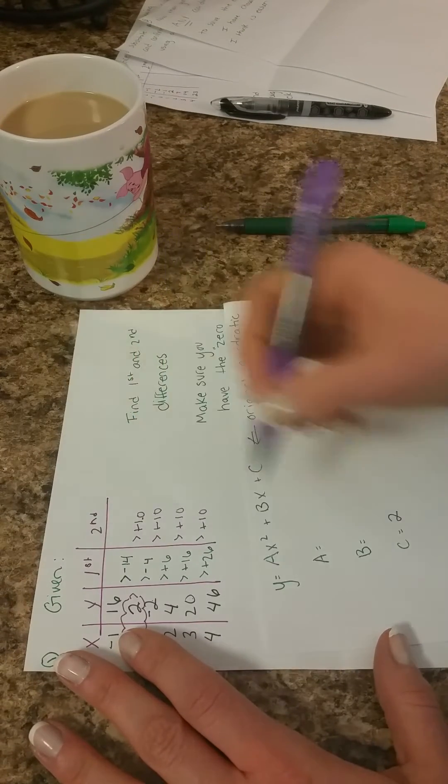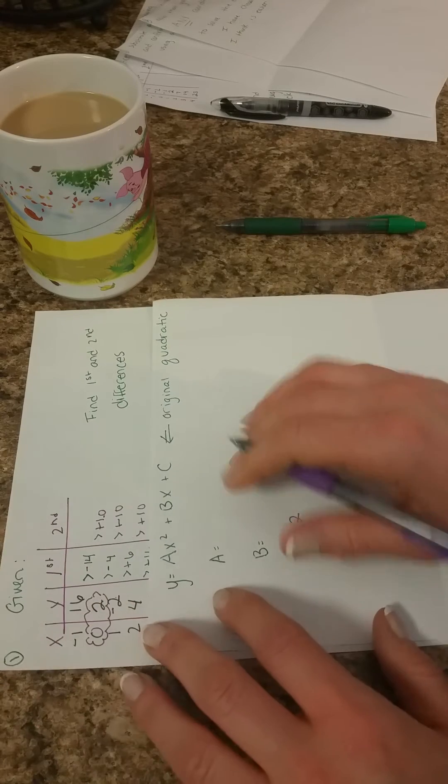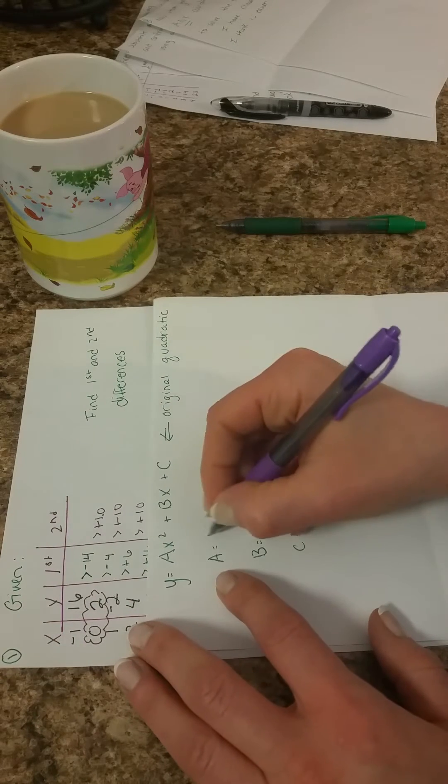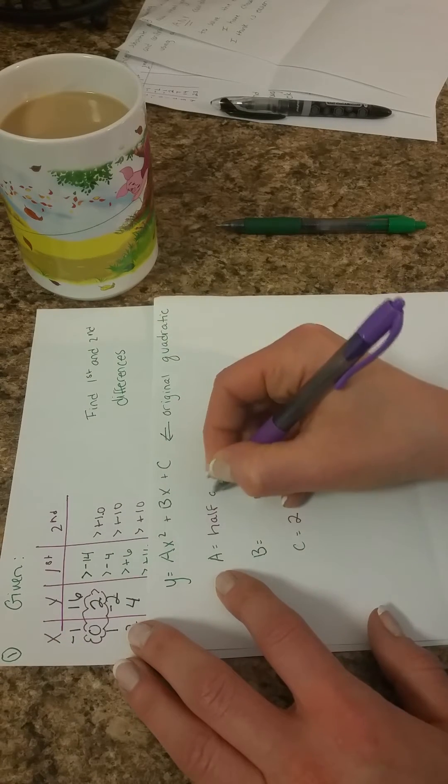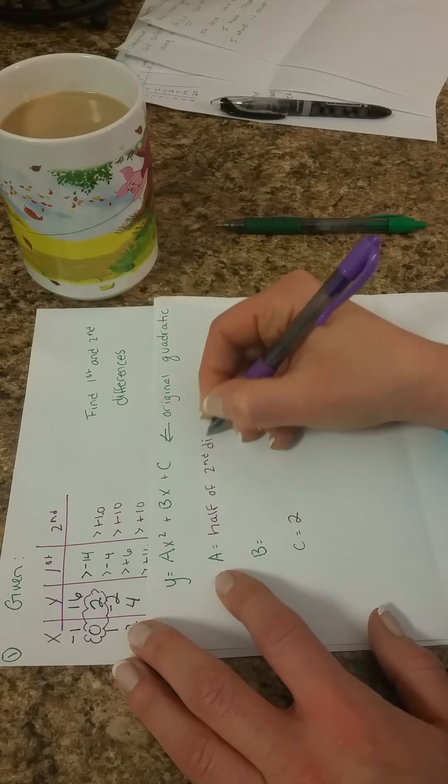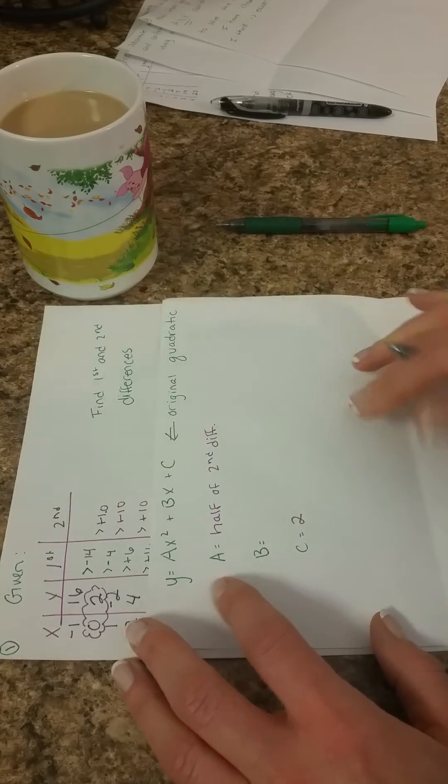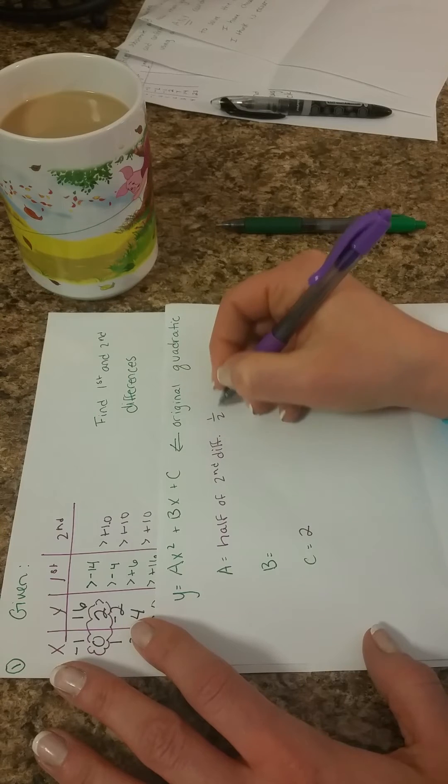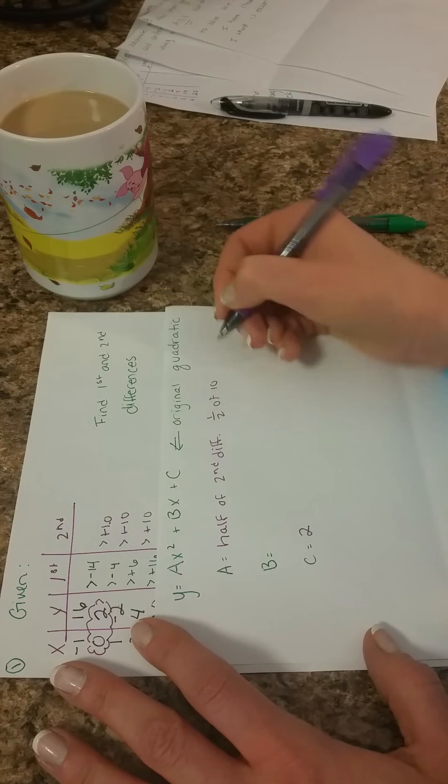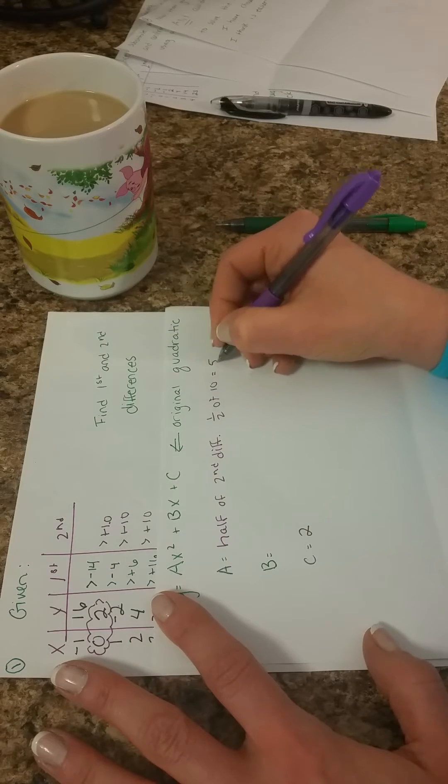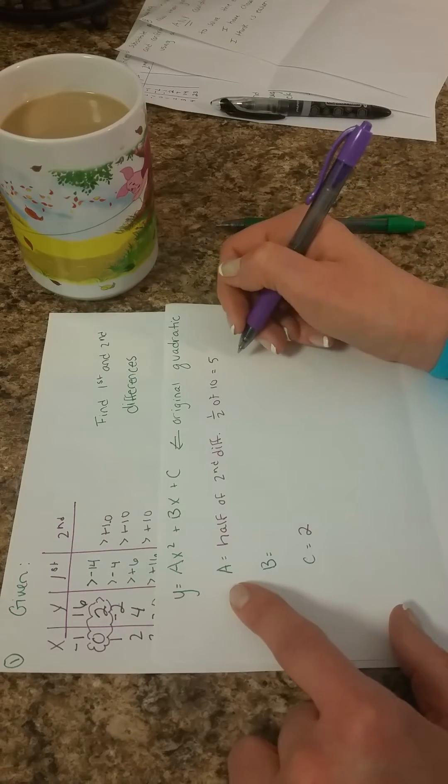Whatever your second difference is, divide it by two, and that will be A. So I'm going to write in that A equals half of second difference or diff. So one half of 10 or one half times 10 is 5. So I know that A is 5.